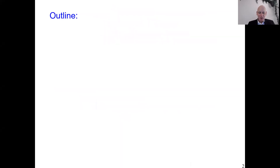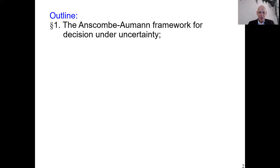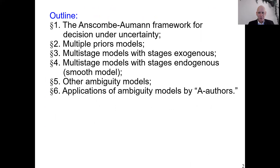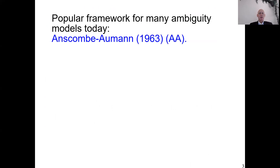The outline of what we will do next in this presentation: first, I will introduce the Anscombe-Aumann framework for decision under uncertainty. Then some models that use it, and in the end, a short comment on applications. The Anscombe-Aumann framework is very popular — almost all theoretical papers in the field nowadays use that framework.